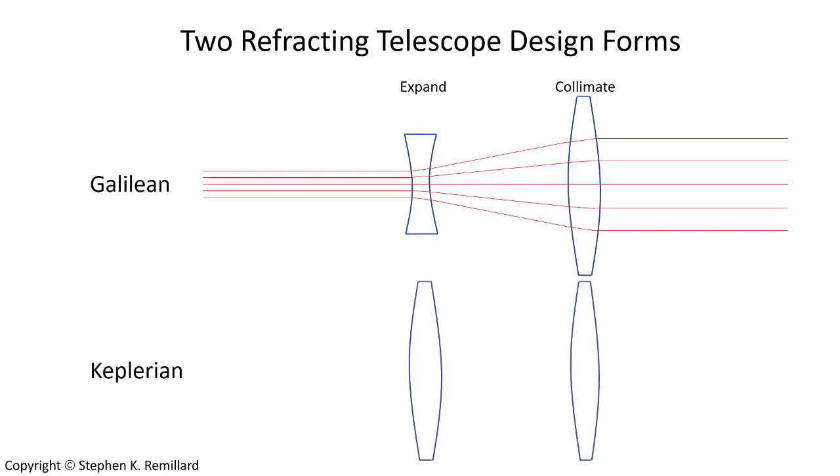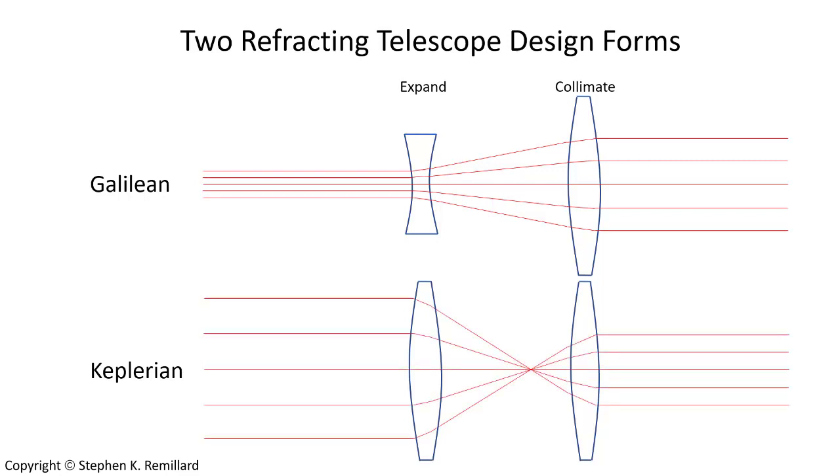The Keplerian telescope uses two converging lenses where the first lens focuses the light to the focal point of the second lens so that it emerges from the second lens fully collimated.